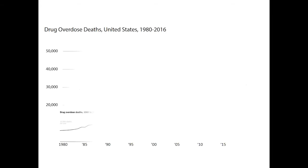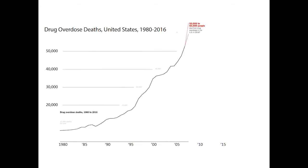What is the state of the epidemic nationally and here in Rhode Island? This figure from the New York Times shows how the epidemic has grown exponentially over the last couple of decades - showing the number of drug overdose deaths in the United States. The 2016 data came in at over 63,000 deaths. This is well in excess of the number of gun deaths at their peak in 1993 and the peak number of deaths due to HIV and AIDS in 1995. This could very well be the epidemic of this generation, much like HIV was for earlier public health researchers.